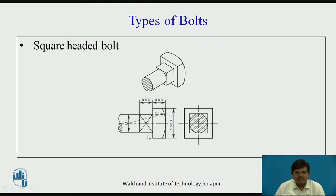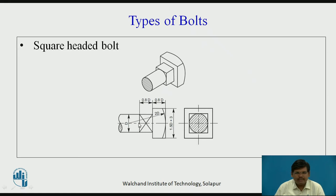This is a square headed bolt. The shank is circular and the head is in square form. When this bolt is inserted, it fits into a square hole provided in the application — this square shape avoids the bolt from moving by itself, giving additional clamping help. There is also a square shoulder provided in this area. This type of bolt also comes without the square shoulder, with a total shank of circular form. The dimensional relations with respect to D are shown on the screen.